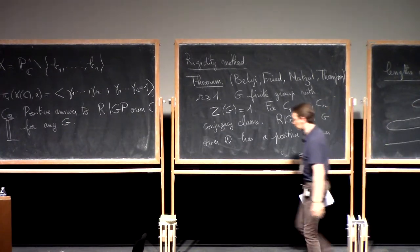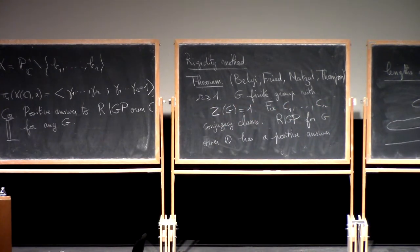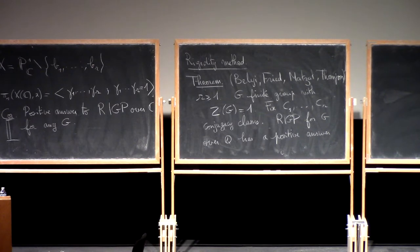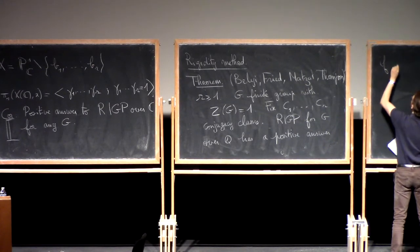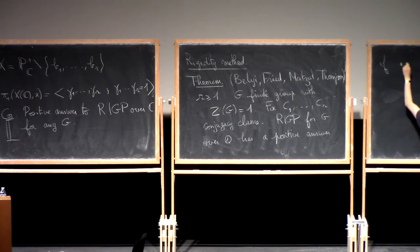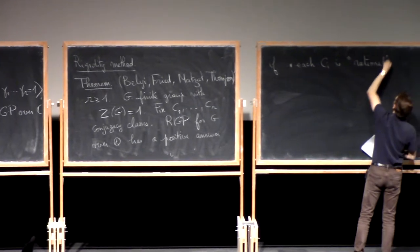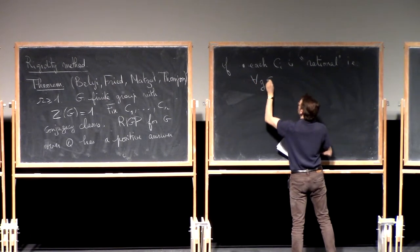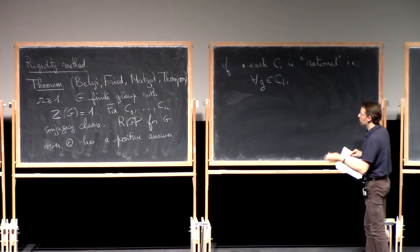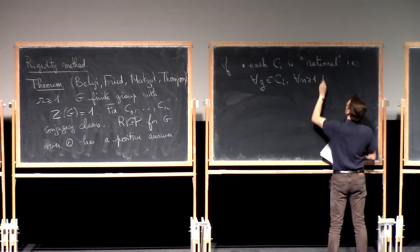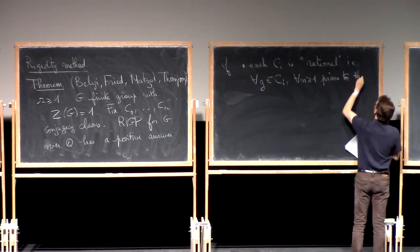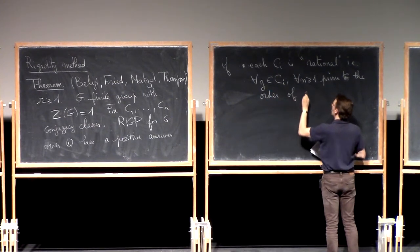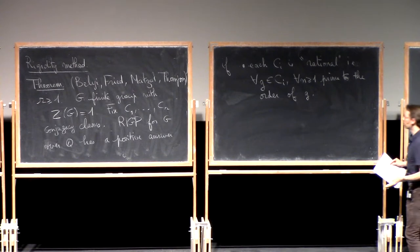The conditions are at the same time a bit technical and completely elementary. The first condition: each Cᵢ is so-called rational. This means that for any g in Cᵢ and any integer n prime to the order of g, the power gⁿ is conjugate to g in G.